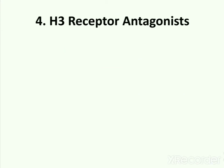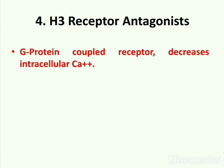Next category is H3 receptor antagonists. H3 receptor is the third type of histamine receptor and is a G protein-coupled receptor. H3 receptor antagonists bind to the H3 receptor and decrease intracellular calcium 2+ ion concentration. Decreasing the intracellular calcium 2+ ion concentration results in the relaxation of smooth muscles, thus producing relief in histamine-induced contraction.